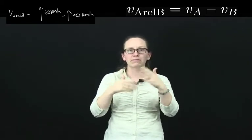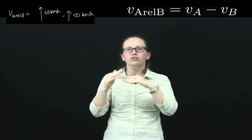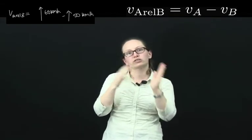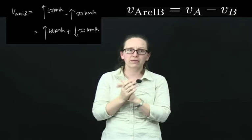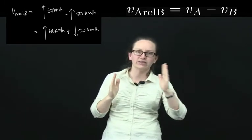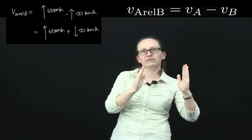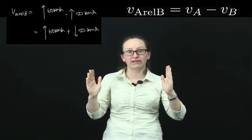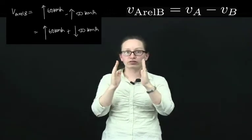Now remember that when we subtract a vector to make it a negative vector, we just switch its direction. So what we've got now is 60 kilometres per hour in the direction you're travelling plus 50 kilometres per hour in the opposite direction. When you add these two together, you're left with 10 kilometres per hour in the direction you're travelling.